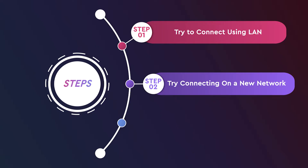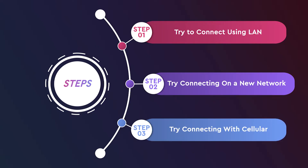You can also try switching off Wi-Fi on your mobile phone and use your cellular connection instead. Now attempt a connection to your My Cloud Home device. If the device works with the cell connection, there's a third-party application on your computer causing the issue.